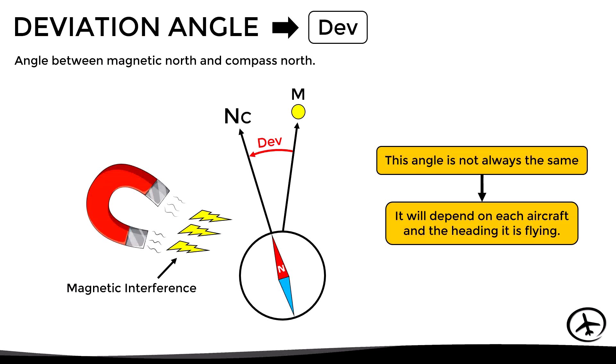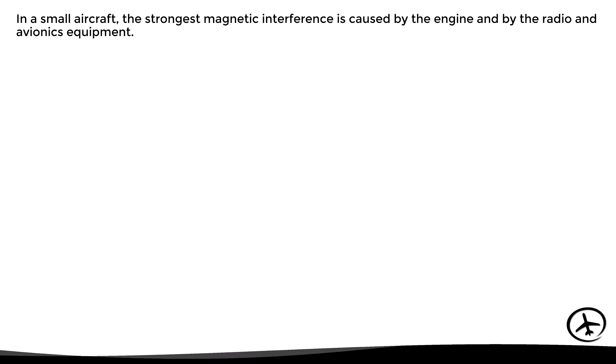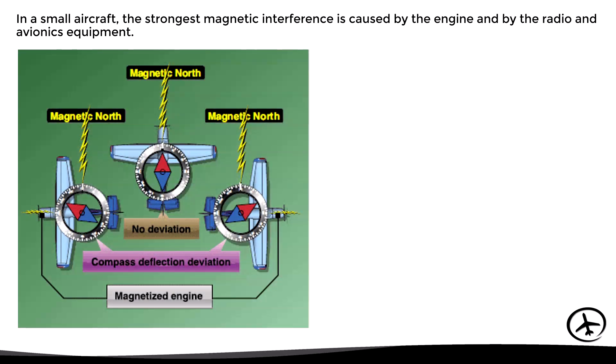The deviation angle is not always the same; it depends on each aircraft and the heading it is flying. In a small aircraft, the strongest magnetic interference is caused by the engine and by the radio and avionics equipment. Therefore, compass deviation depends on the position of the engine and avionics in relation to magnetic north, which changes depending on the heading. Fortunately, this interference can be measured and corrected for each heading.